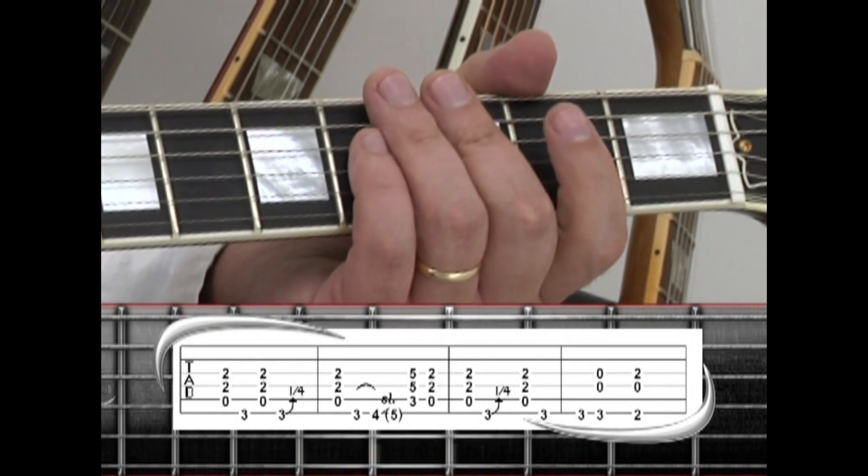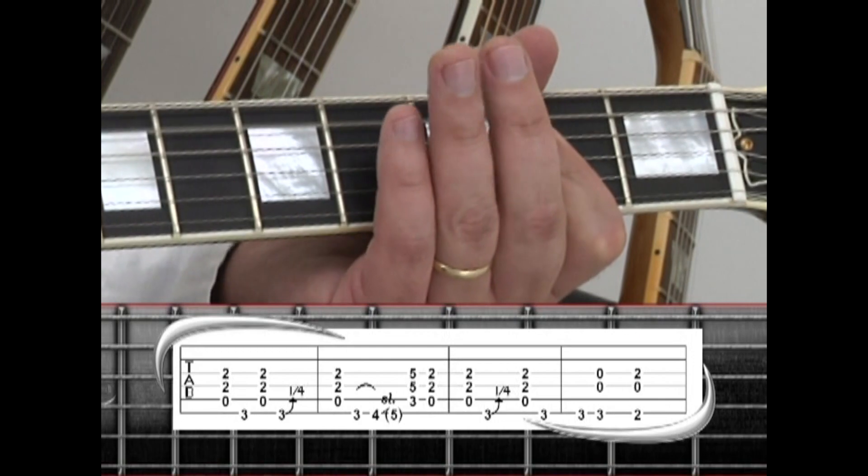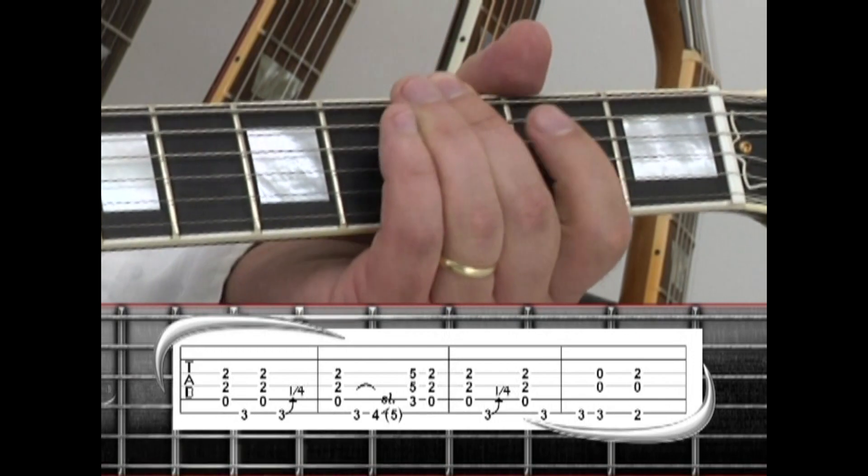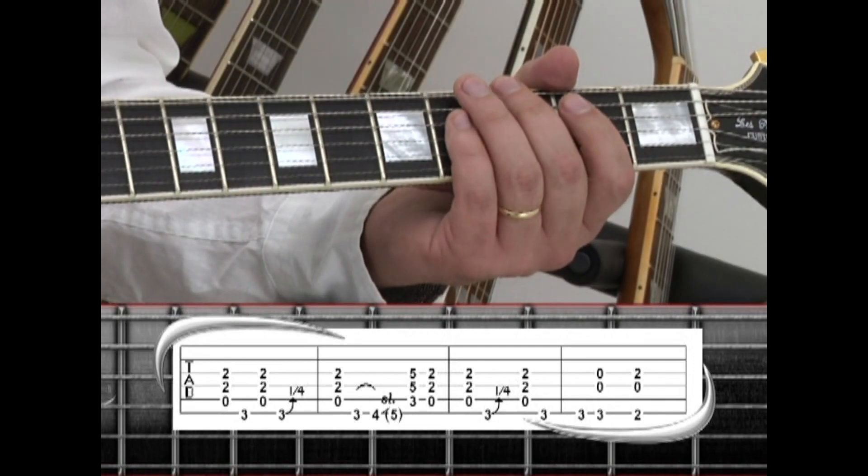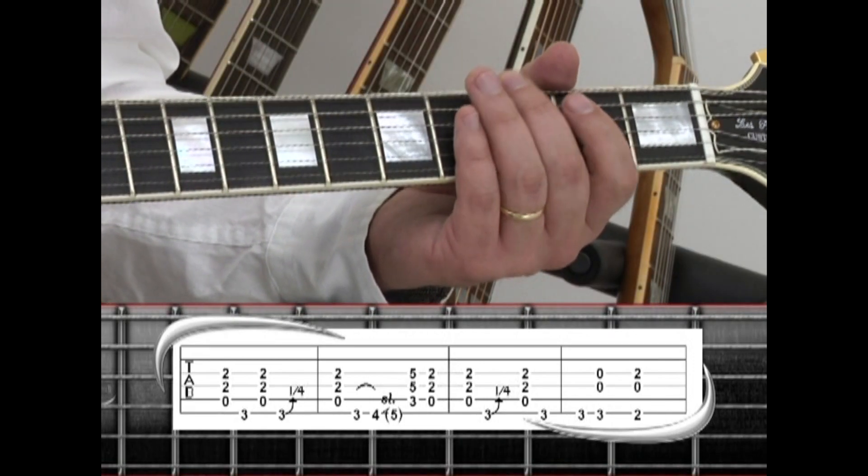Next is A5 to G with a slight bend. A5 to G with a mute. And end with a G note to a G5 power chord.